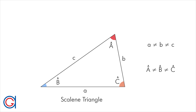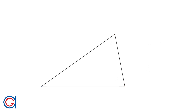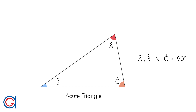So now we are going to classify the triangles according to their angles. This scalene triangle, classified according to its angles, is called an acute triangle, because its 3 internal angles are less than 90 degrees, as can be seen here on the screen.